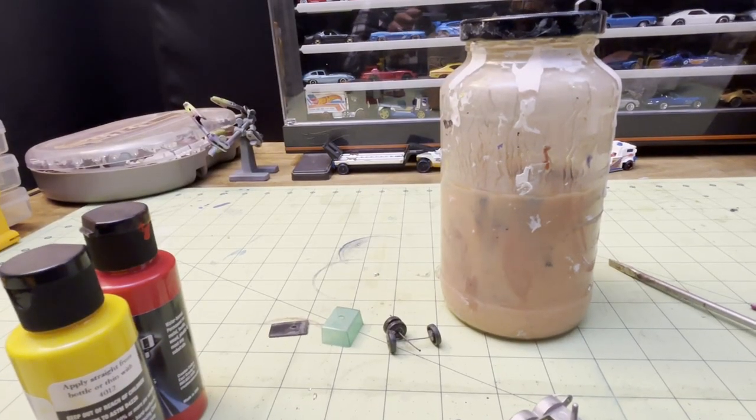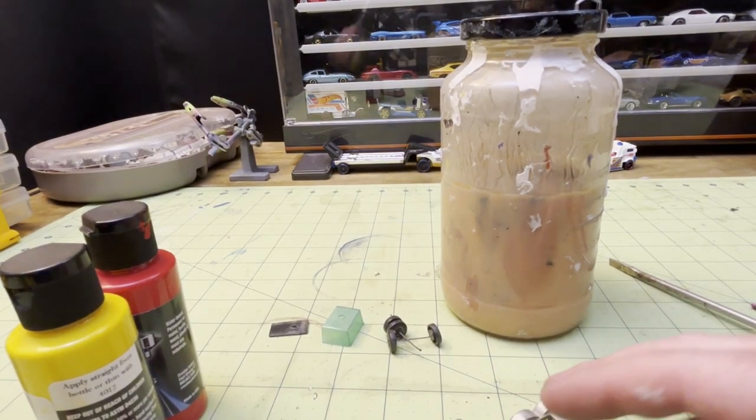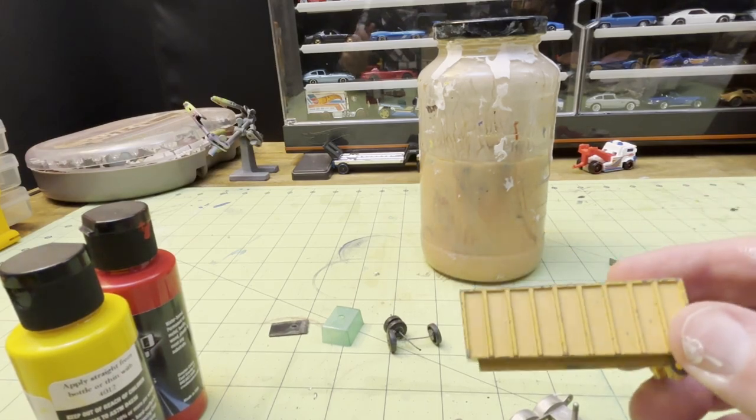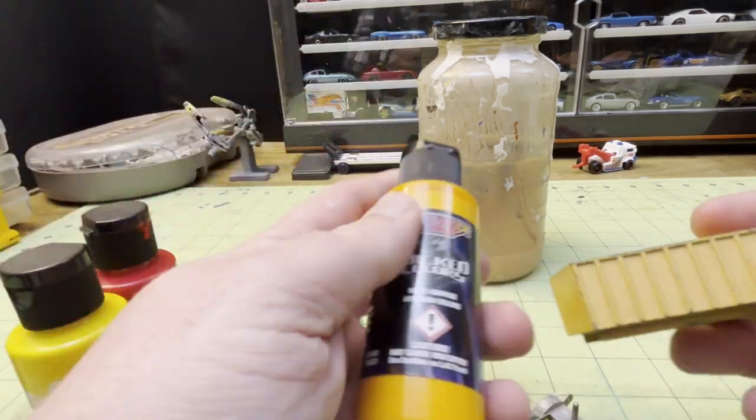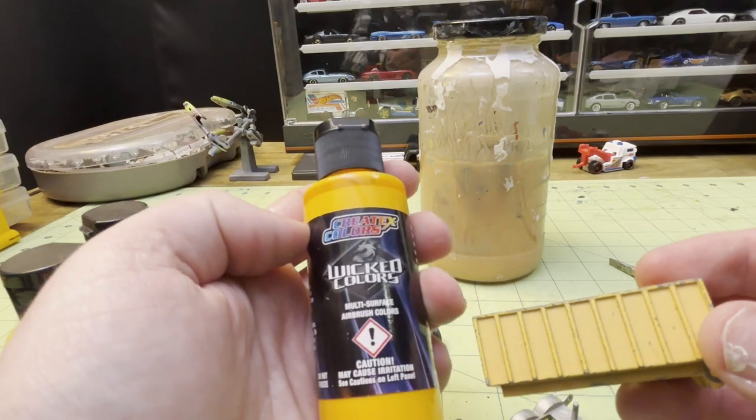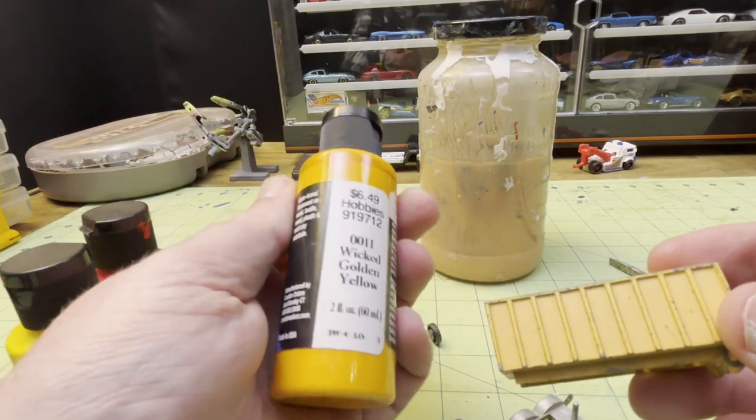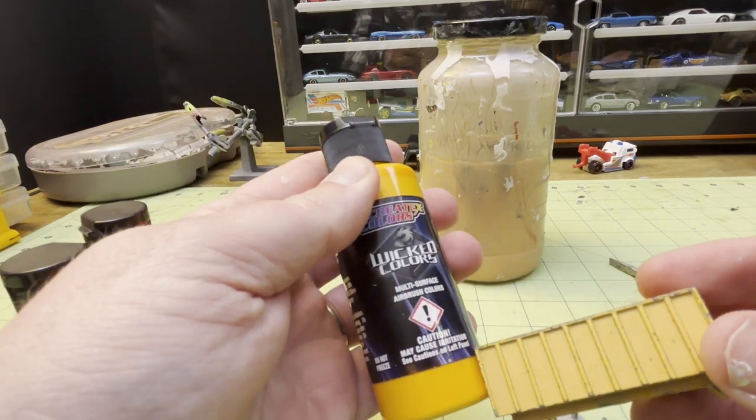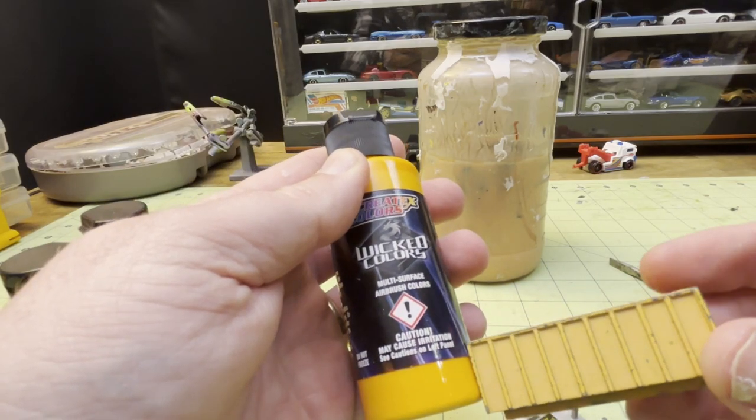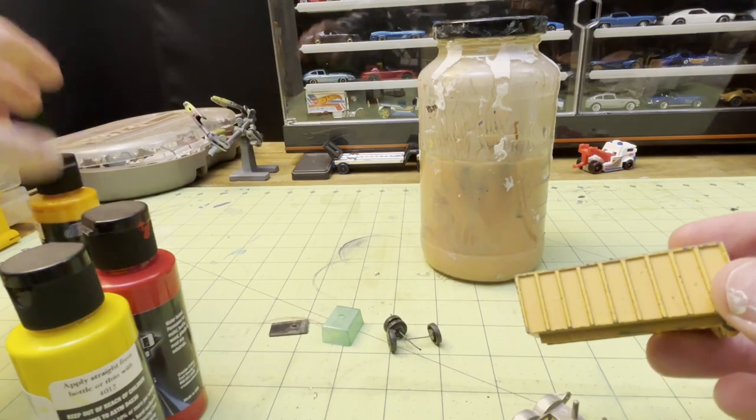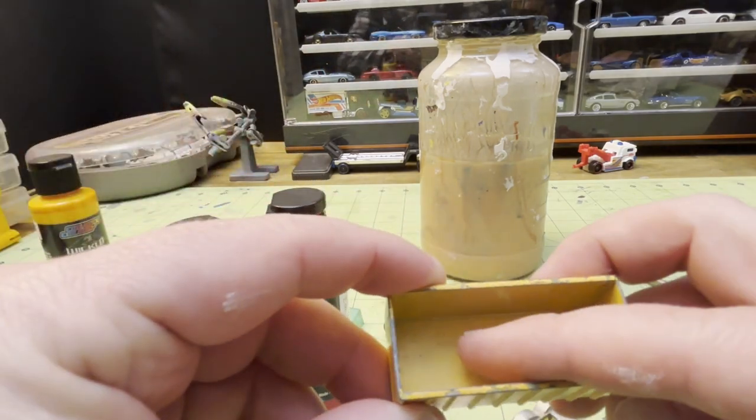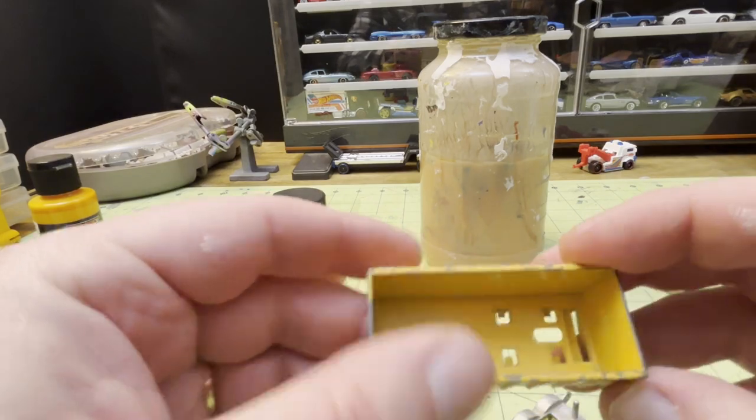Well, I almost made a mistake. I was about to throw this in the stripper tank but then I thought I should probably get this color matched. I thought that this Createx color, Wicked Golden Yellow, would be a good match, but it's not, it's way too orange. So I'm going to have to mix up my own. I'm going to put little dots of paint in here until I can get a close match.